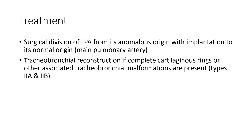Treatment: surgical division of the left pulmonary artery from its anomalous origin with reimplantation to its normal origin at the main pulmonary artery. Tracheal-bronchial reconstruction may be needed if there is a complete cartilage ring or other associated tracheal abnormality from the left pulmonary artery. Classification includes Type 2a and Type 2b.